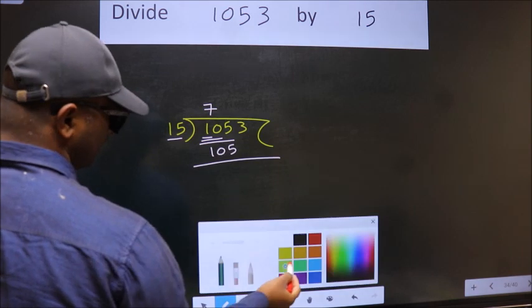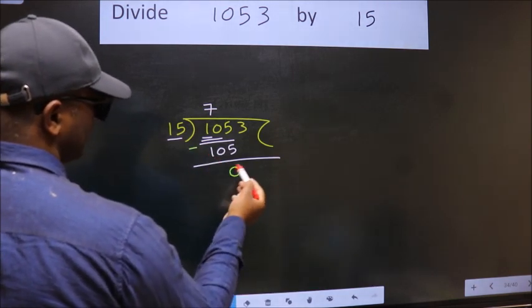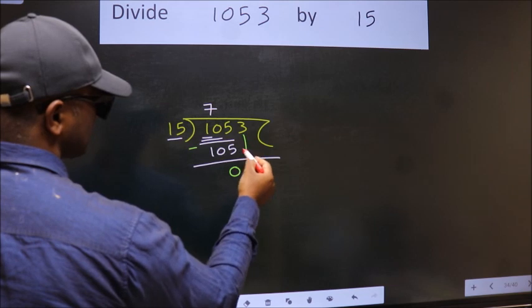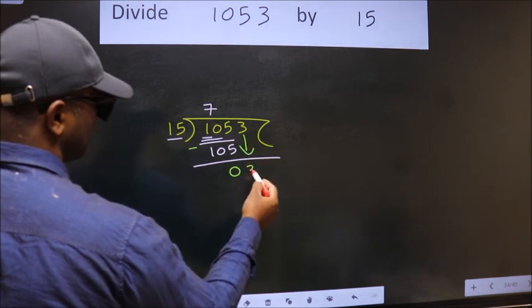Now we subtract and get 0. After this, bring down the next number. So, 3 down.